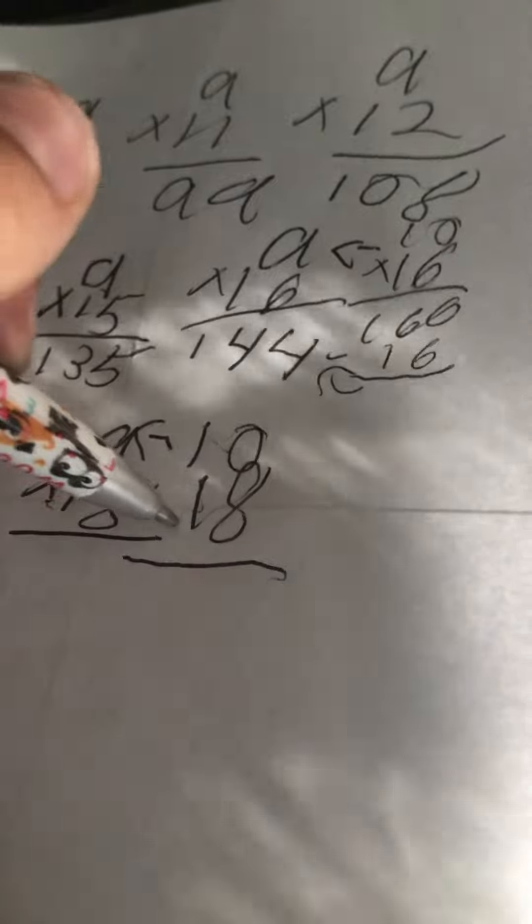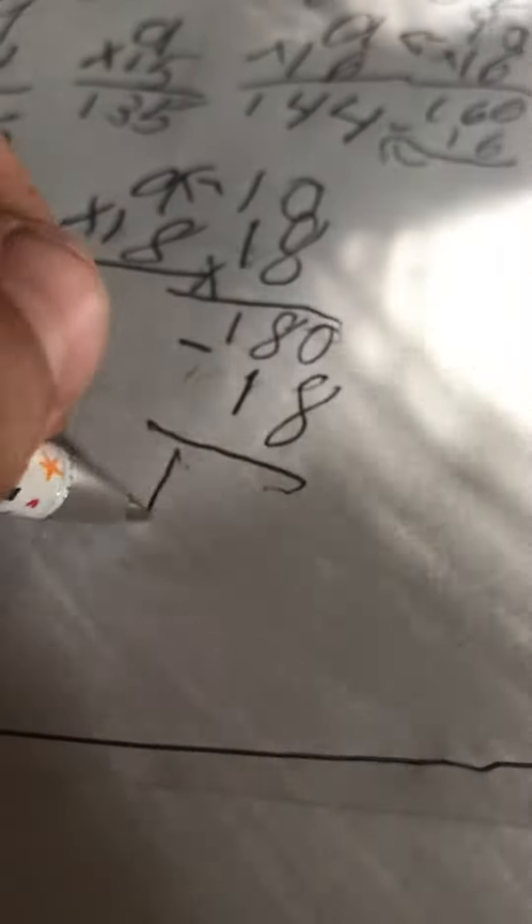Ten. And then this here, and times it. That's 180. But since it's nine, subtract 18 and get 172.